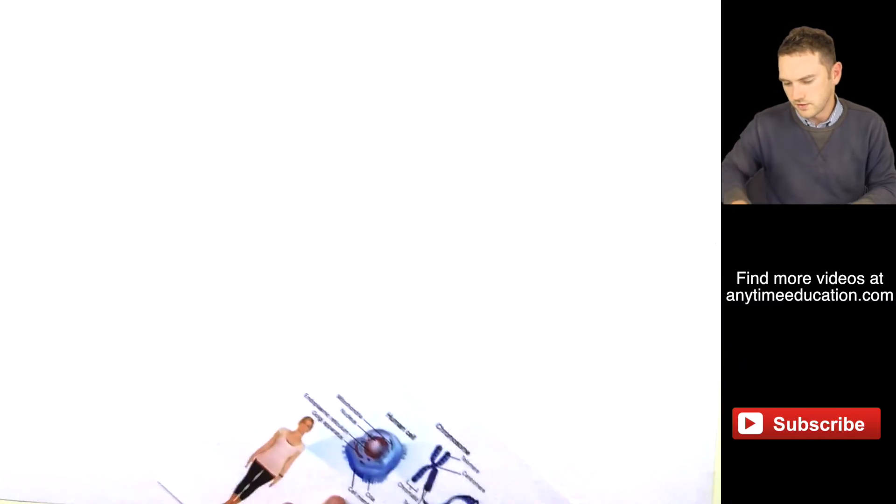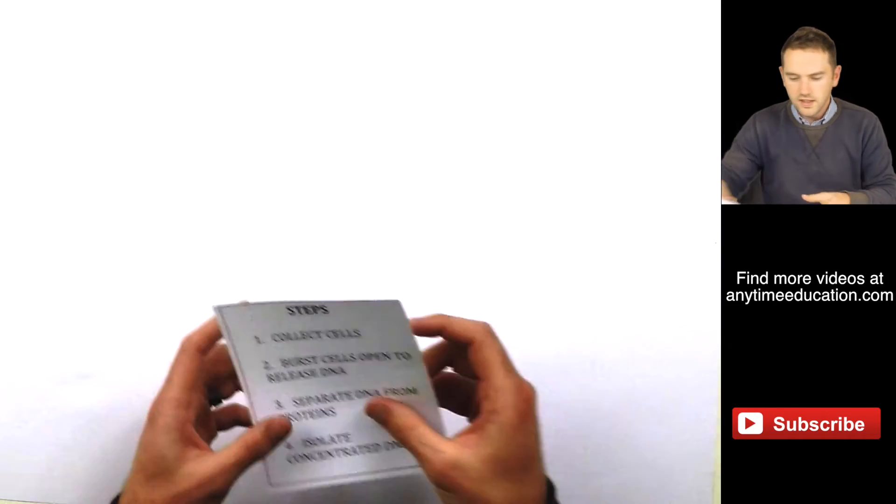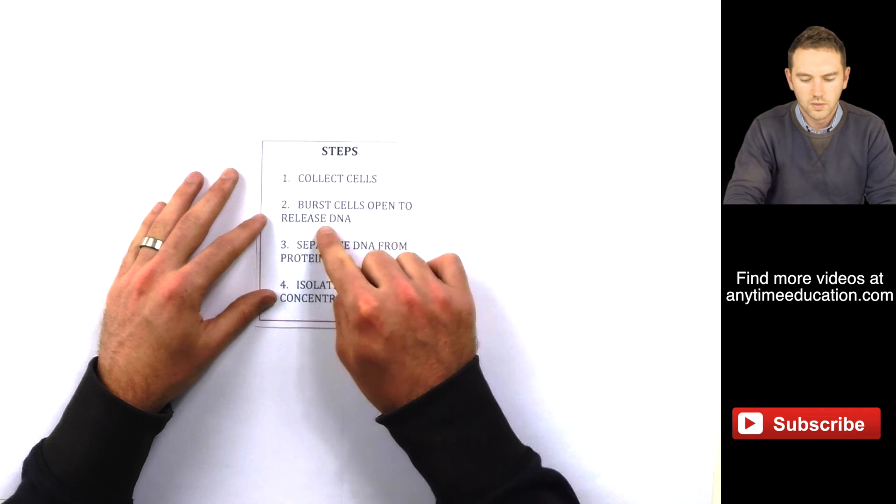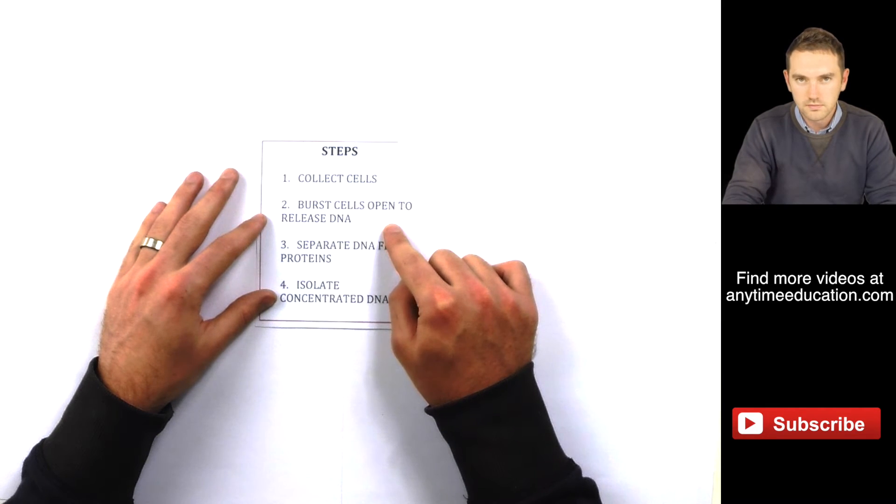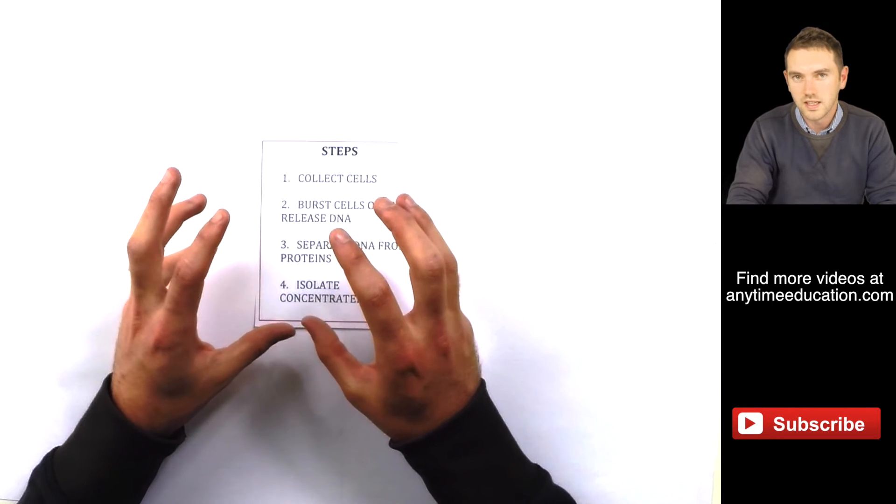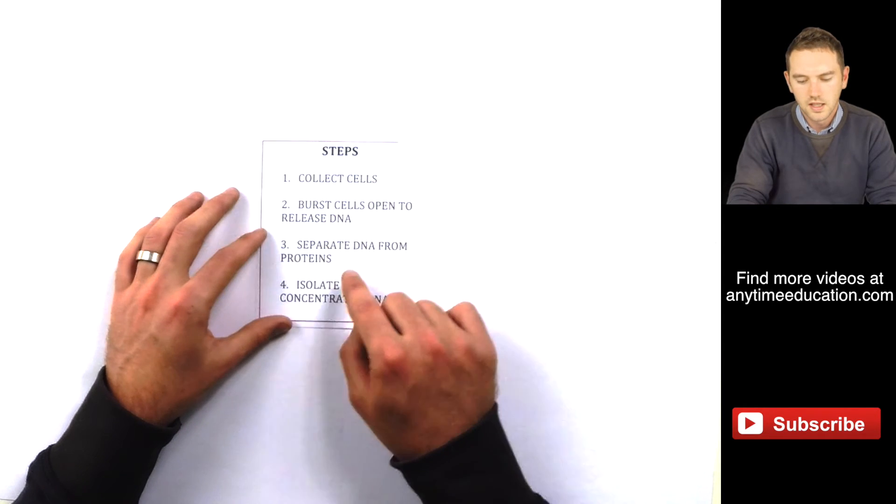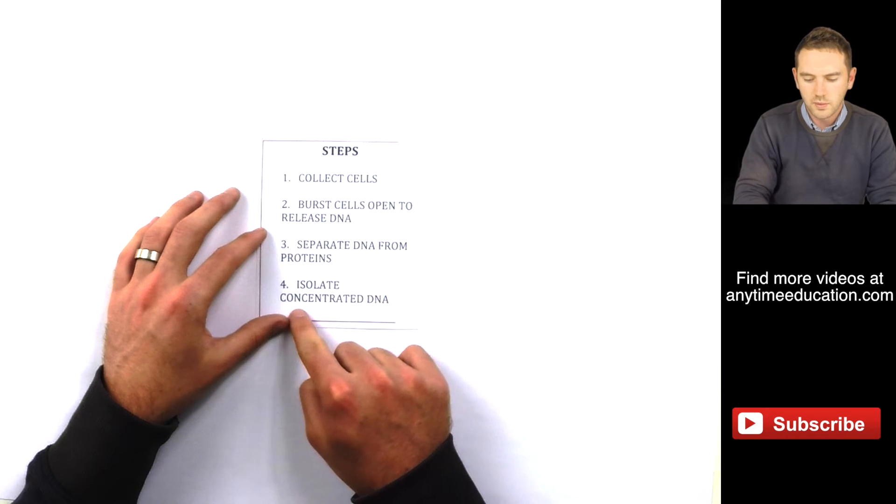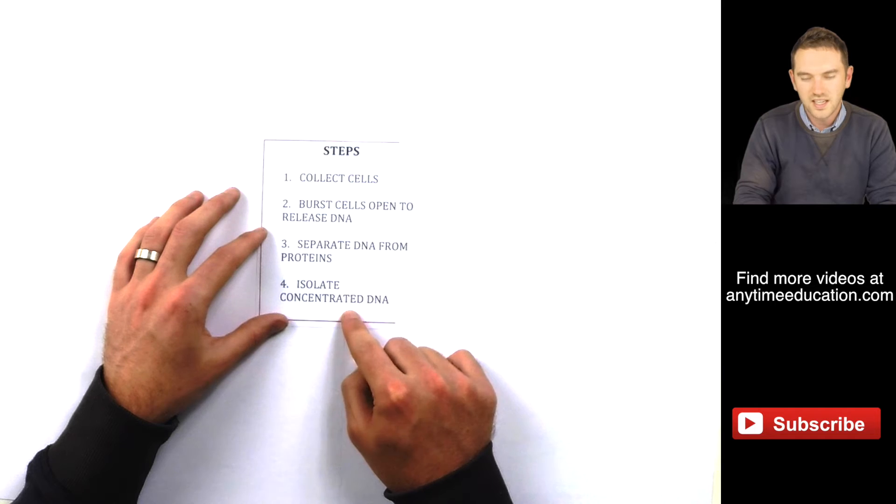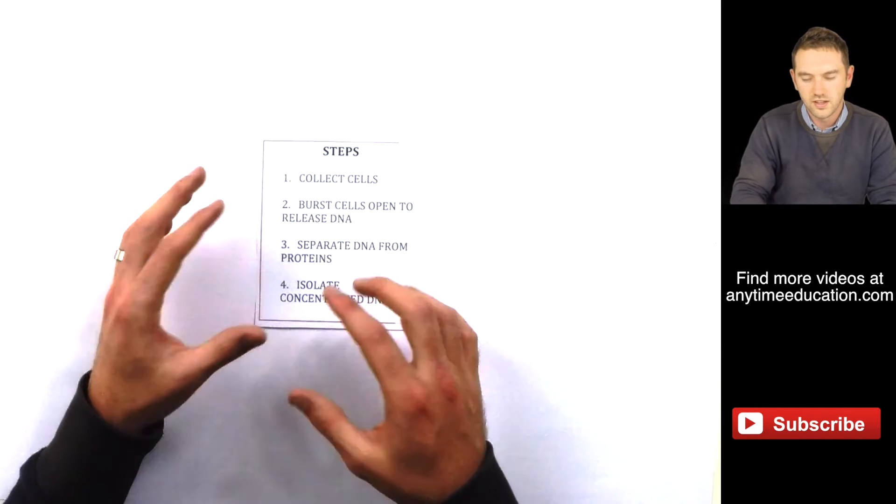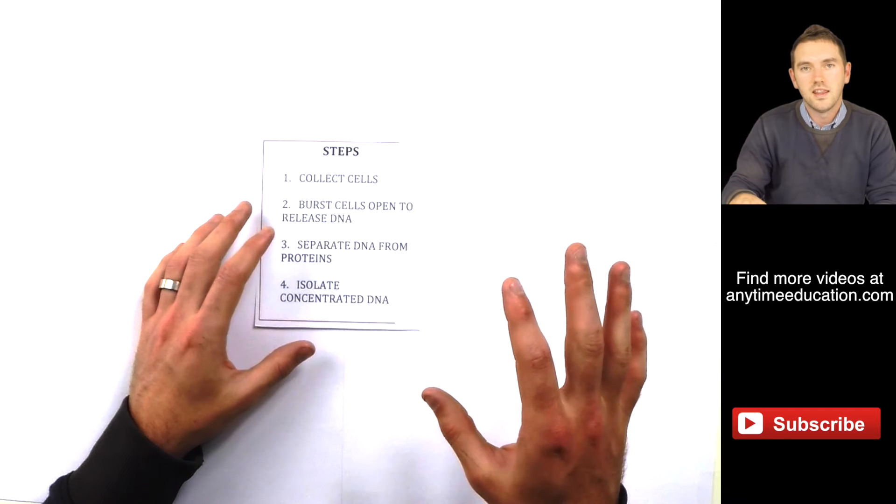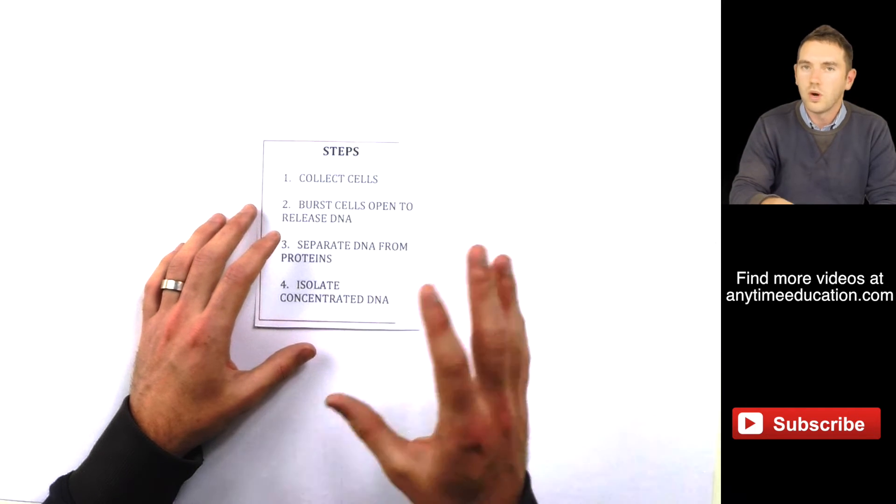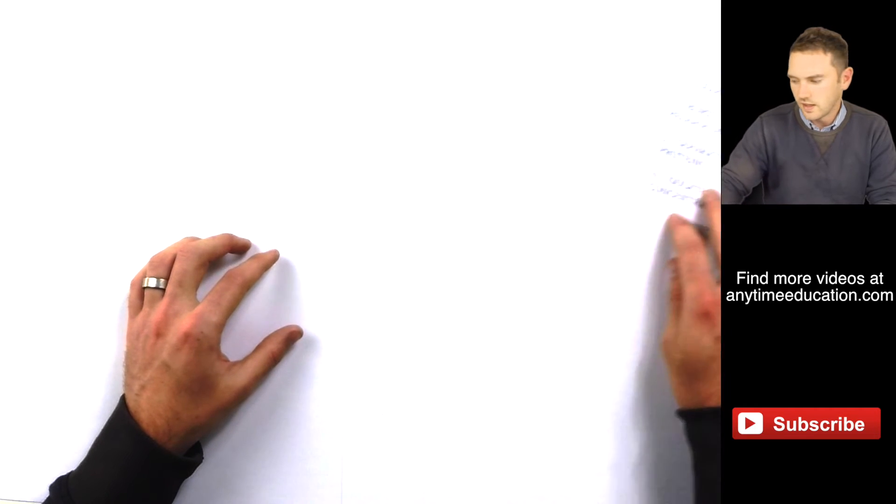Okay, so step one. Let me just organize myself. So basically these are our four steps. We want to collect our cells. We want to burst cells open. Okay, because we only want what's really in the nucleus. We want to separate the DNA from proteins and other cellular components. And then we want to isolate our concentrated DNA. And then we can do whatever we like with it. So we're just focusing on getting the DNA. And then the other three videos in this series we'll be looking at then what can we do with that DNA. So let's look at step one.